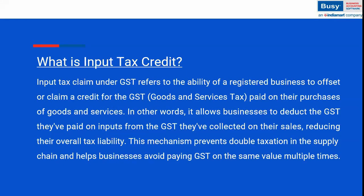You can claim input tax credit on that kind of purchase entry, or you can do an adjustment from your output GST — whatever GST you collect from your sale transactions can be adjusted with your input GST. This mechanism prevents double taxation in the supply chain and helps business owners verify whether they are paying GST on the same value multiple times.